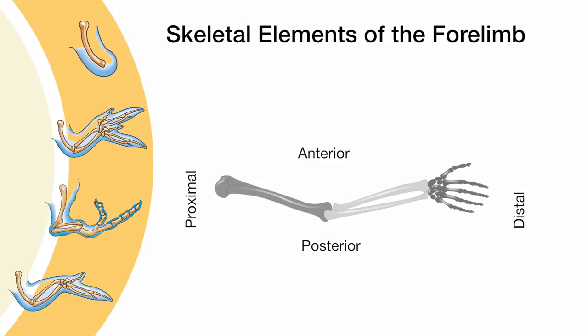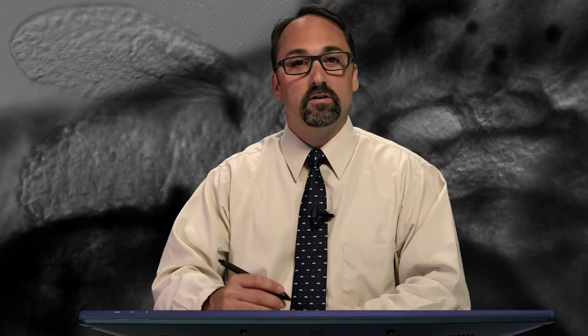Now let's go to an illustration to reveal the different elements that build the limb across these axes. The skeletal elements of the forelimb nicely delineate three morphologically distinct regions that run along the proximal to distal axis, such that the humerus represents the most proximal region known as the stylopod, which is followed more distally by the zygopod, constituting the radius and ulna bones, and lastly the autopod or hand with its carpals and phalanges — phalanges being the digits or fingers.